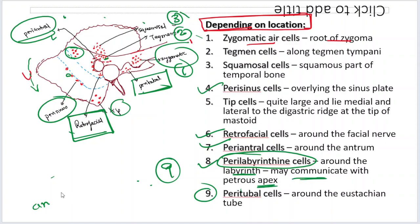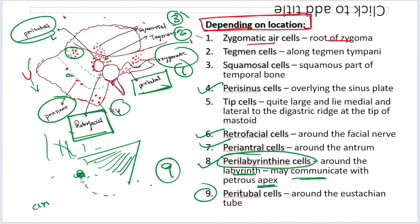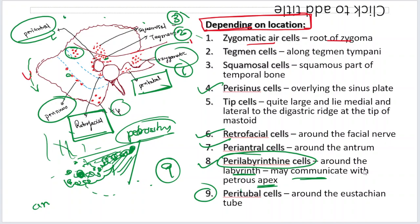There is one clinical significance to the perilabyrinthine cells. The temporal bone has three parts: the squamous part, the petrous part, and the mastoid part. The petrous apex is important because after reaching the antrum and the lateral semicircular canal, around the labyrinth there will be some cells. Sometimes the pneumatization extends up to the petrous apex. Then infection from here can extend into the petrous apex to form petrositis. All cells are basically communicating with each other — each cell is not a separate entity — so if there is infection in the perilabyrinthine cells, it may extend into the petrous apex cells also.